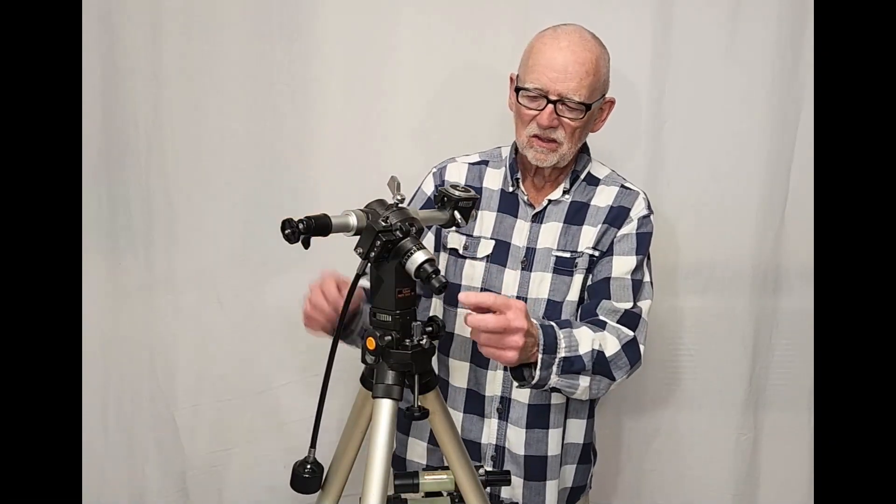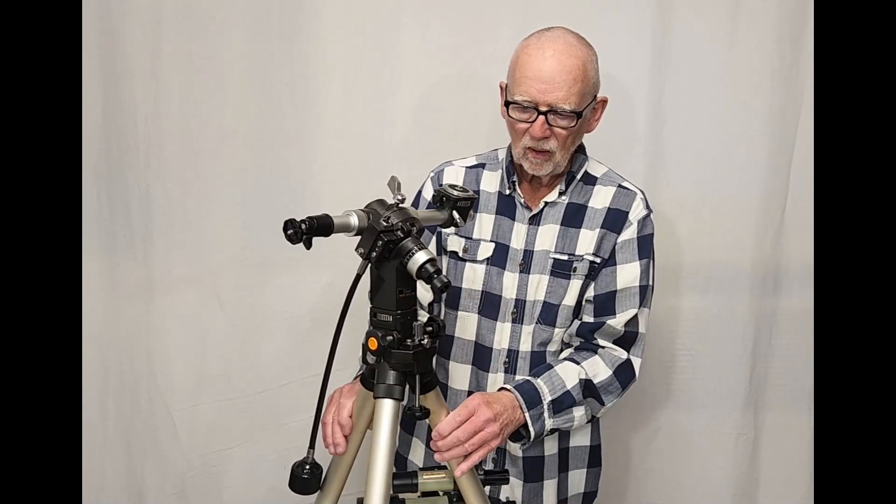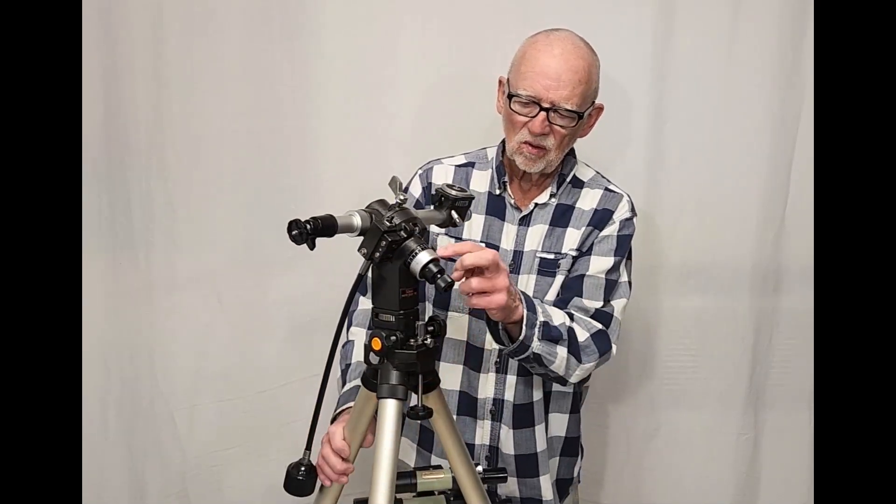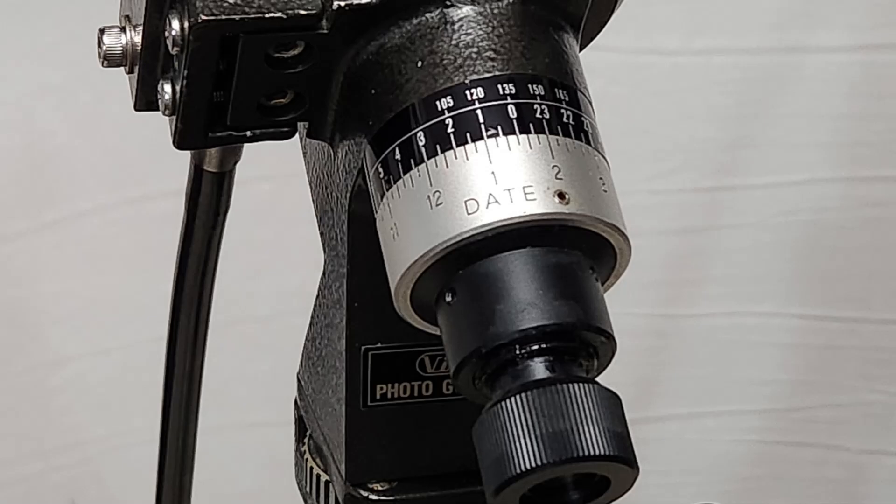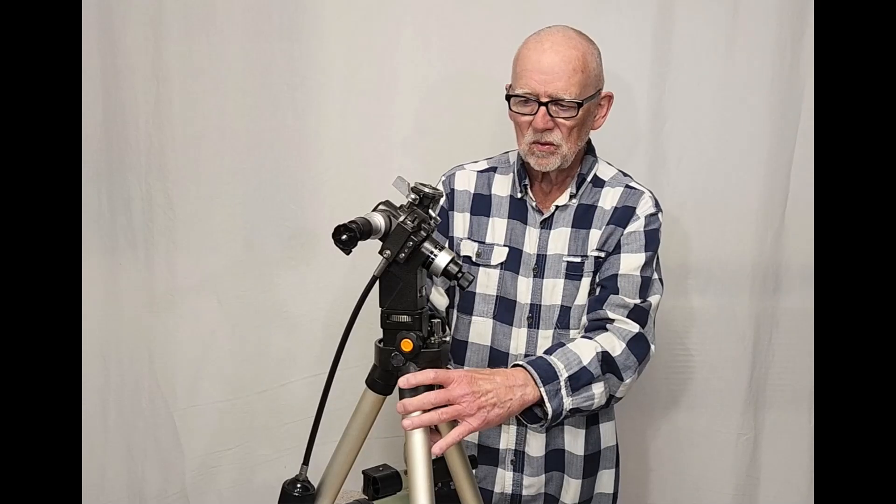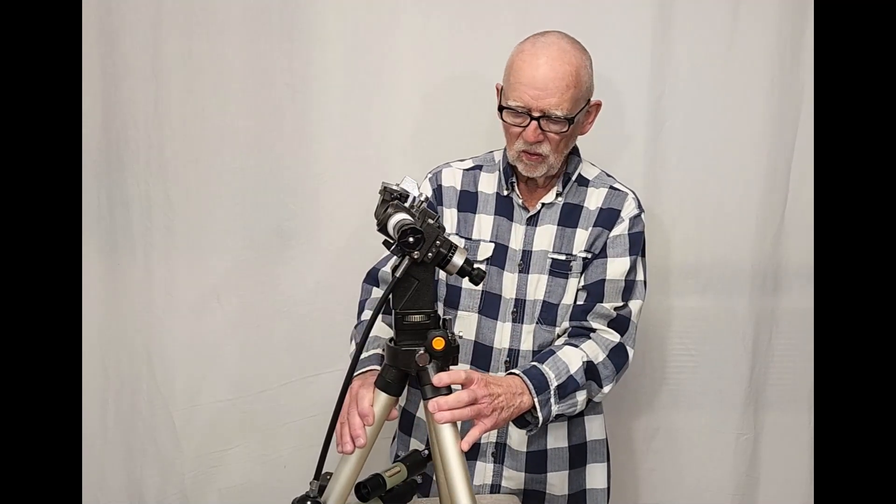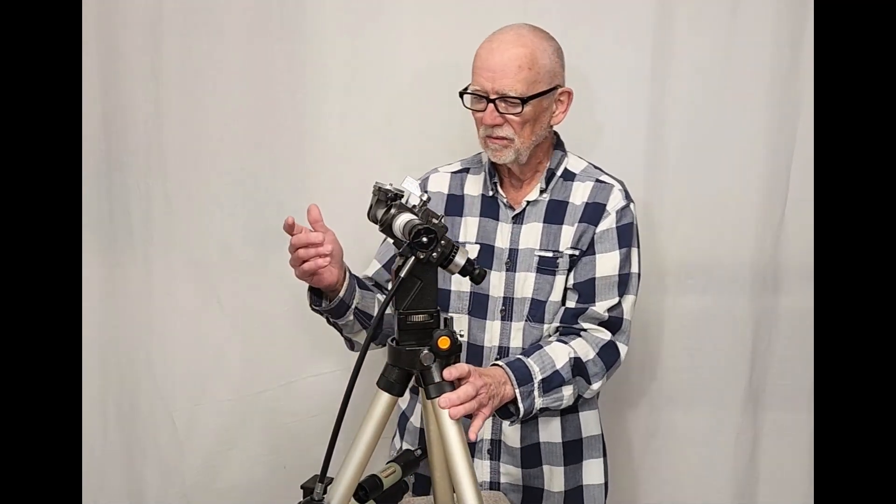Inside the axis of course is the polar scope. Fairly new innovation at the time and they had sort of a complicated system with a vernier dial in the date and the time and blood type and all sorts of information you have to put in to figure out where Polaris goes in here. Nowadays you can do that with an app on your phone.